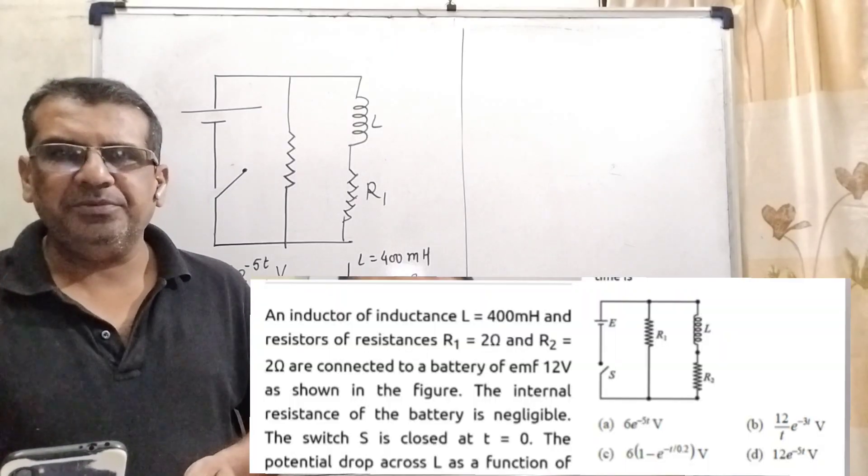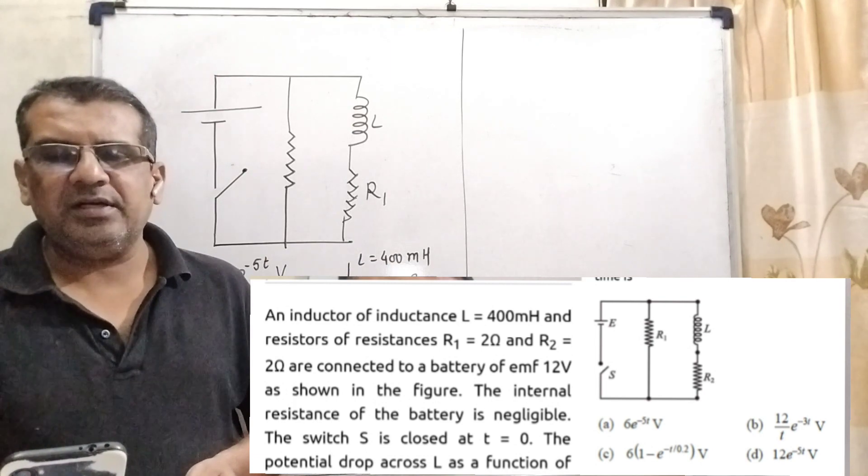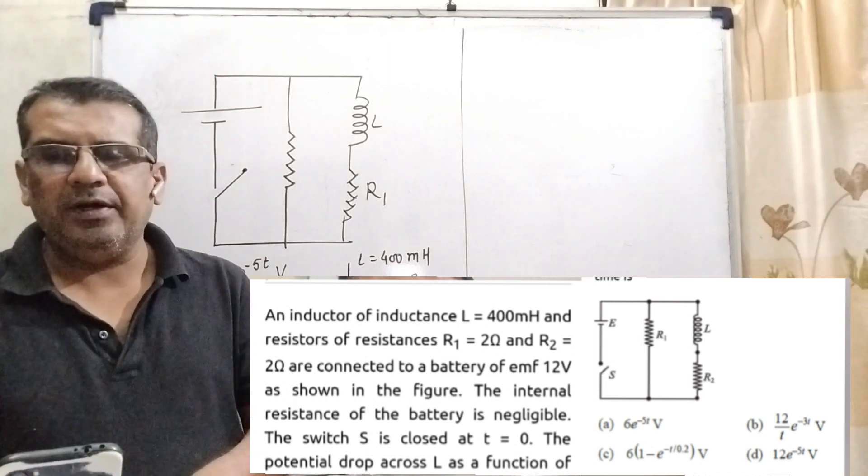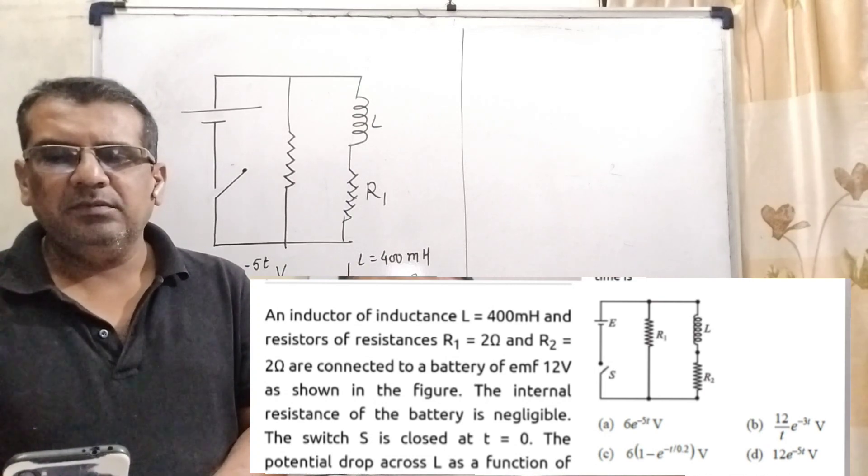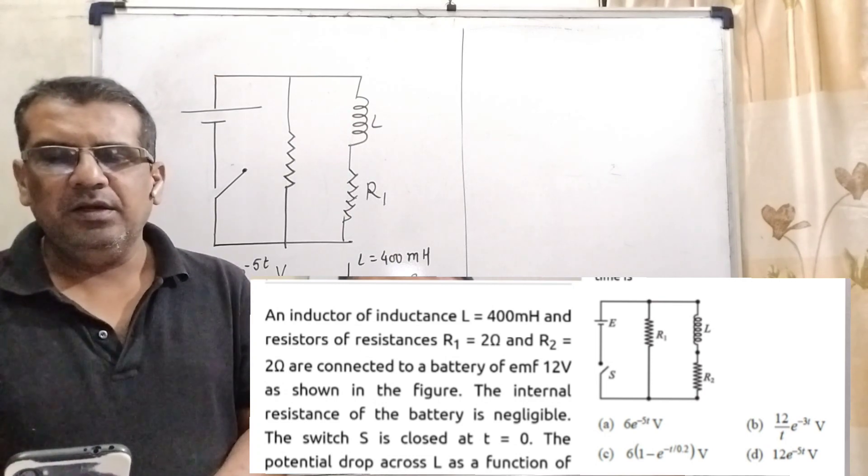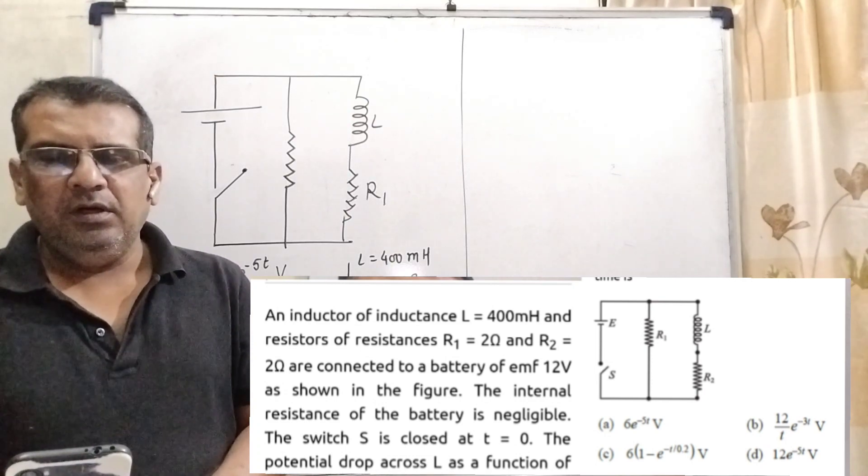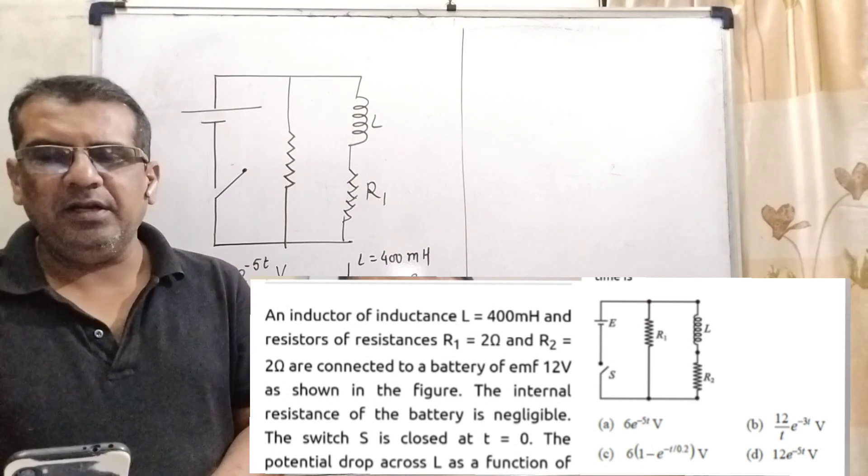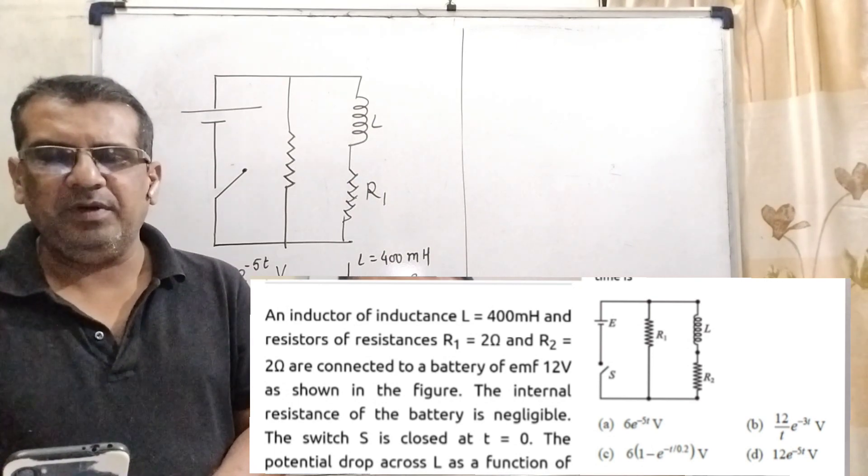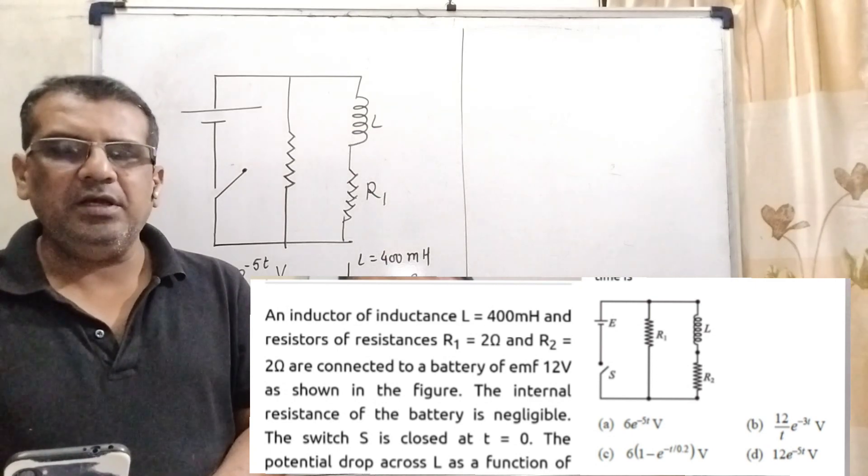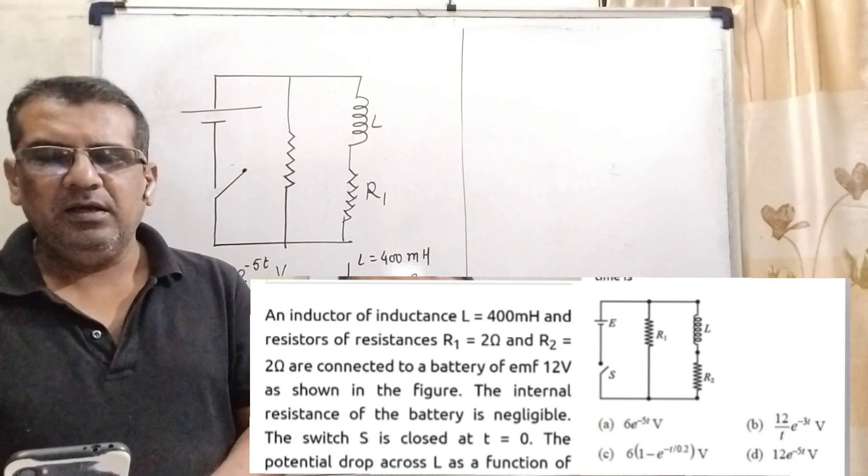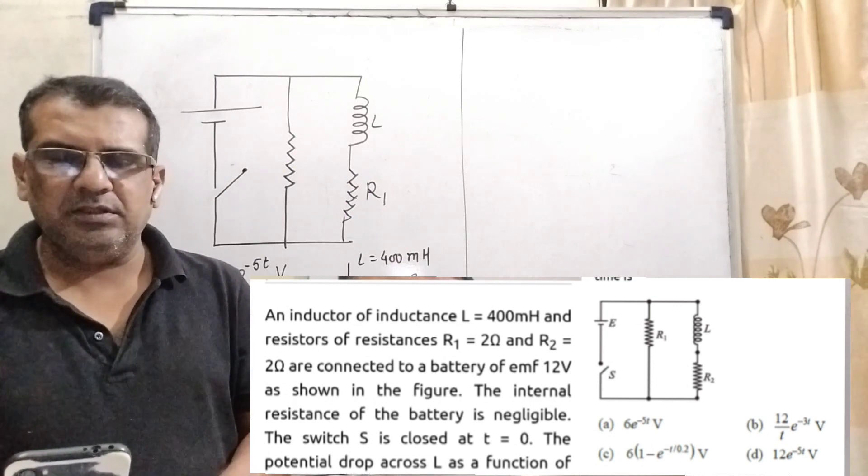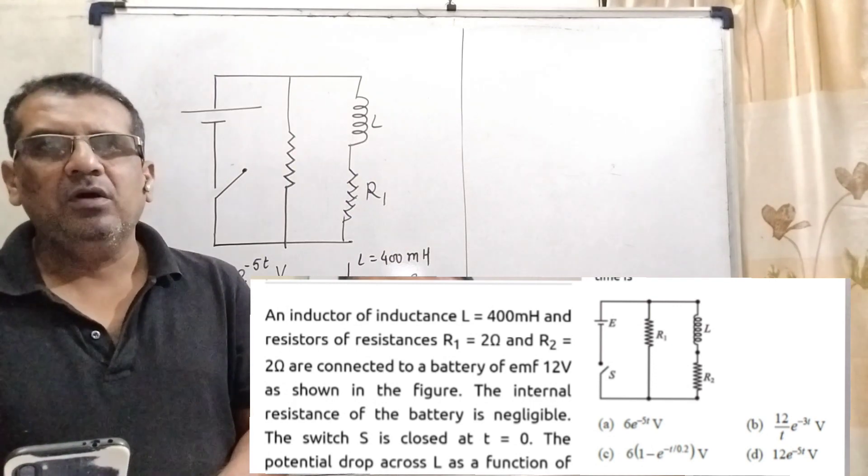Now here is the question. An inductor of inductance L equal to 400 mH and resistors of resistances R1 equal to 4 ohm and R2 equal to 2 ohm are connected to a battery of EMF 12 volt, as shown in the figure. The internal resistance of the battery is negligible. The switch S is closed at T equal to 0. The potential drop across L as a function of time is, and here we have given four options.